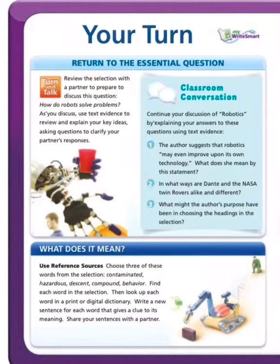Your turn: return to the essential question. Turn and talk — review the selection with a partner to prepare to discuss these questions: how do robots solve problems? As you discuss, use text evidence to review and explain your key ideas. Ask questions to clarify your partner's responses. Continue your classroom conversation about 'Robotics' by explaining your answers using text evidence.